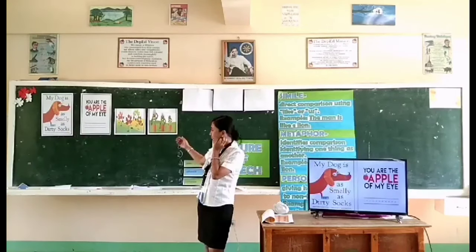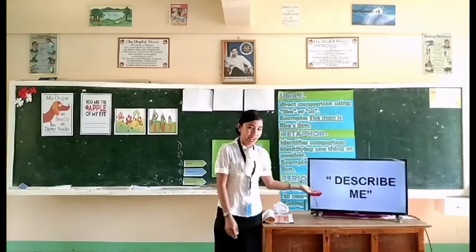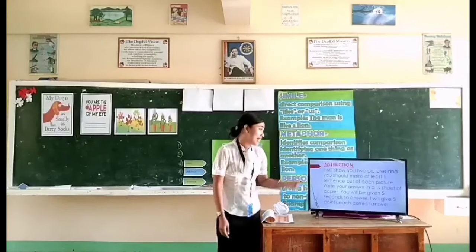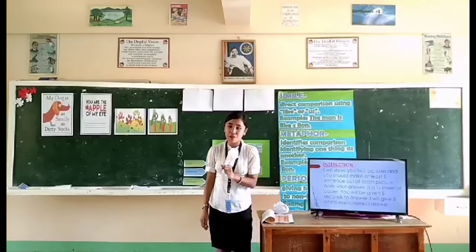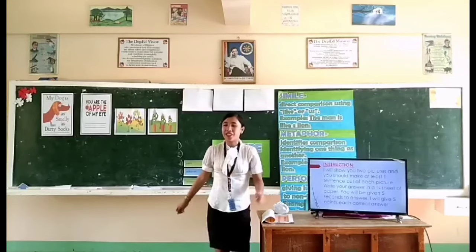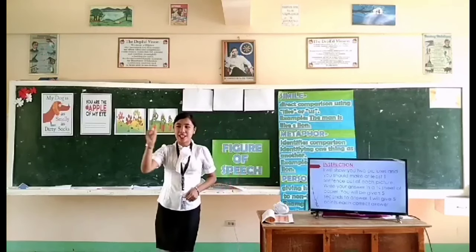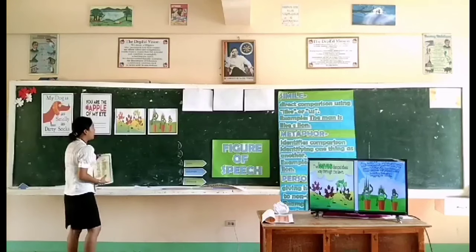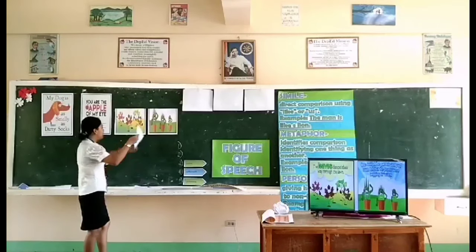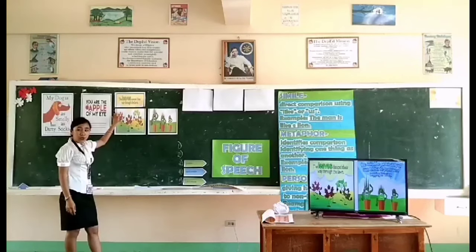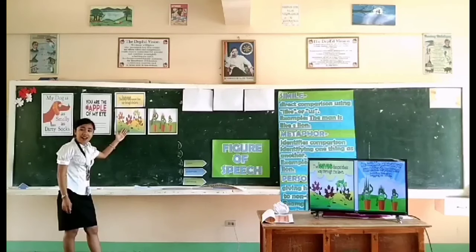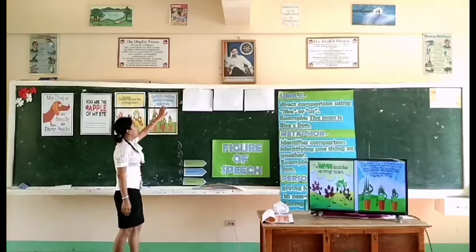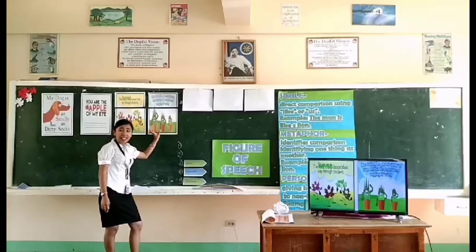Who wants another activity? I have another activity called Describe Me. The instruction is: I will show you 2 pictures, then you should make at least 1 sentence out of each picture. Put your answer on one piece of paper. I will give you 5 seconds to answer. 5, 4, 3, 2, 1 — time is up. Let's check if your answers are correct. The first picture — the sentence should be: the leaves dance their way through the lawn. If you can observe, the leaves are dancing. How about the second picture? It should be the glass, the bedding, or water, because it seems like it is dry.